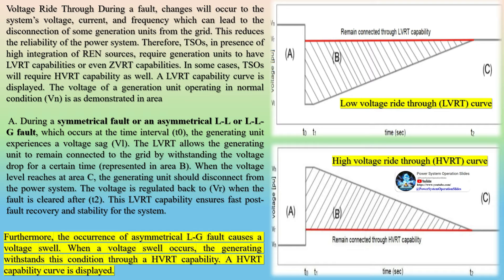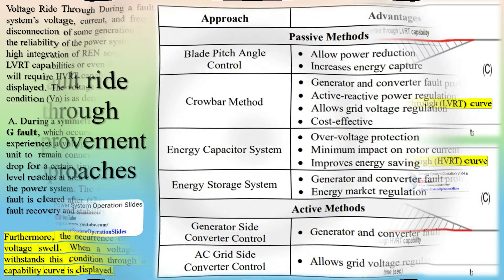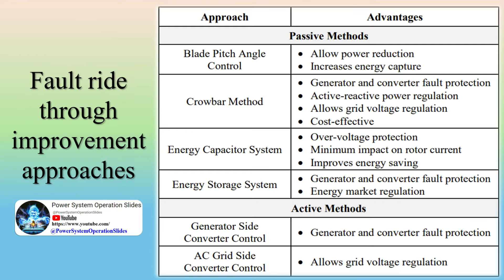An asymmetrical fault is unbalanced and it affects each phase separately, meaning the voltage drop of each phase is uneven and has different magnitude depending on the nature of the fault. An asymmetrical fault can occur as a line-to-ground (LG) fault, line-to-line (LL) fault, or double-line-to-ground (LLG) fault. Asymmetrical faults are difficult to analyze, and almost 95% of faults in a three-phase system are asymmetrical.